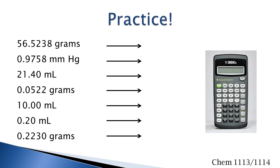Let's do some practice. The top number — you can just count the digits, and there are six, so this number has six significant figures. In the second example, the leading zero is not significant, so this number has four significant figures. In the third example, the trailing zero has a decimal point in that number, so this zero is significant, and this has four significant figures.